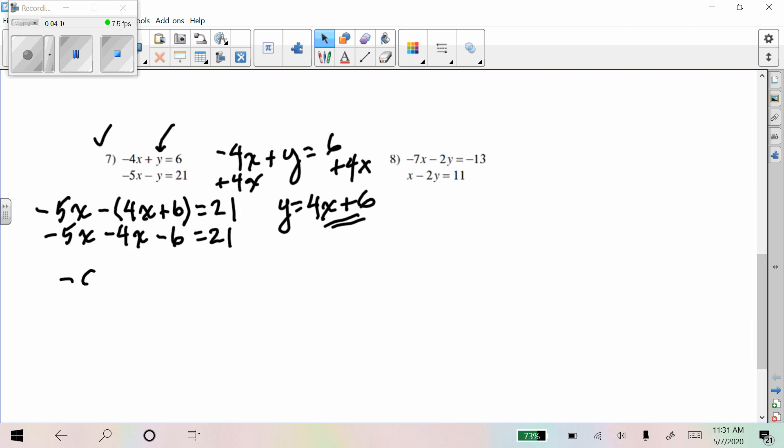So negative 9x minus 6 equals 21. Add 6 to both sides. And divide by negative 9. And we get x equals negative 3.